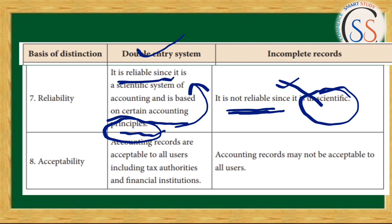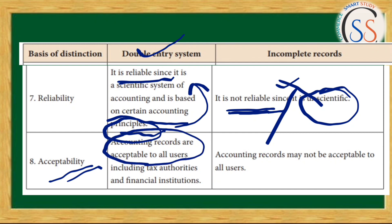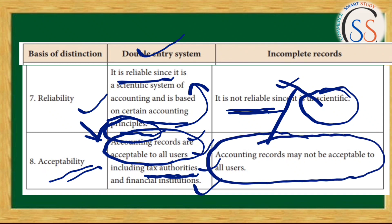The eighth and last difference is acceptability. In the Double Entry System, accounts are prepared perfectly and reliably, and are acceptable to all users including tax authorities, income tax departments, financial institutions, and banks. In the Single Entry System, accounting records may not be acceptable to all users such as the income tax department and banks. This is the total difference between the Single Entry System and the Double Entry System.